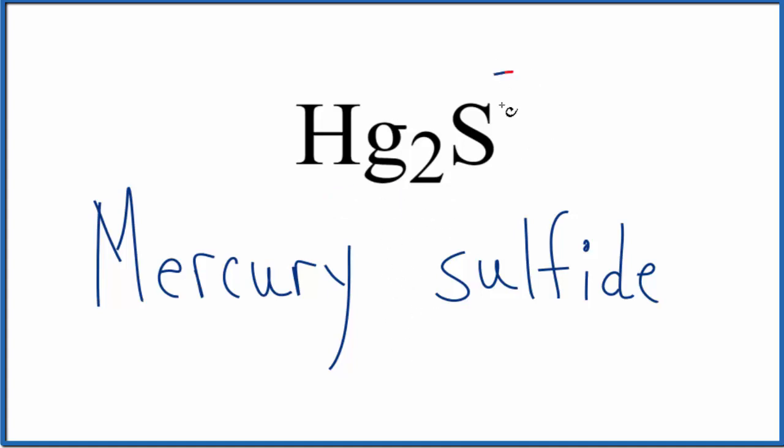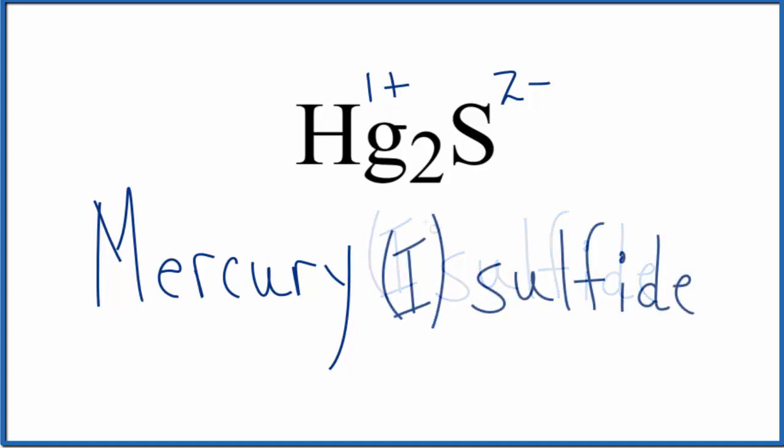So the sulfur, that's going to be 2-, and then mercury, each one of them, that's going to be 1+, two times 1+, that balances out the 2-, so we have mercury one sulfide. Let's put a Roman numeral in here. So that makes the name for Hg₂S, mercury (I) sulfide.